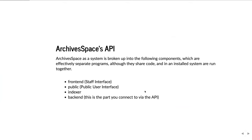ArchivesSpace as a system is broken up into components that are basically separate programs, even though they're bundled together as an application. What there really is is a collected system made up of the front end — the staff interface — the public interface, the indexer, which puts records in a fast retrieval and search system called Solr, and the back end, which talks to the database and has fundamental control over updating and taking actions on records. The back end is the part that you connect to via the API.